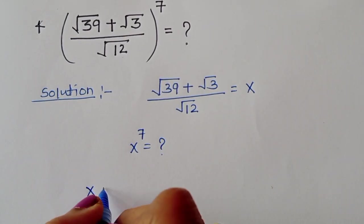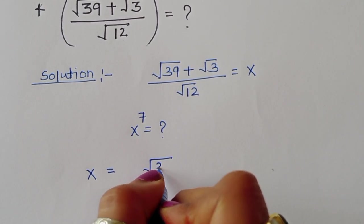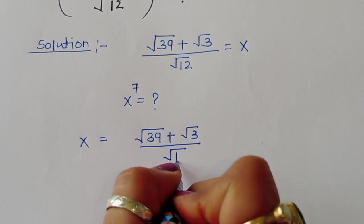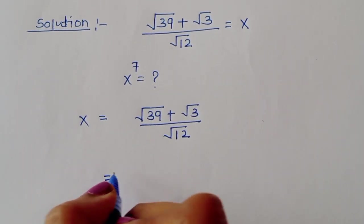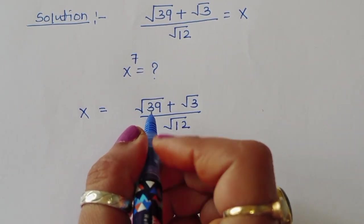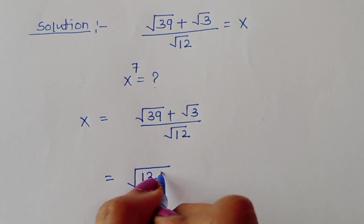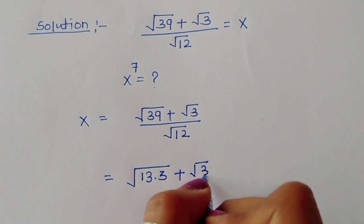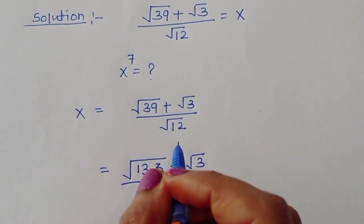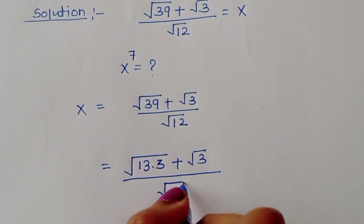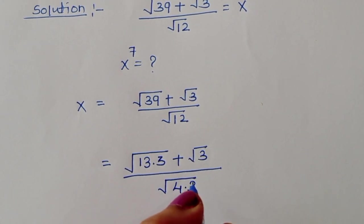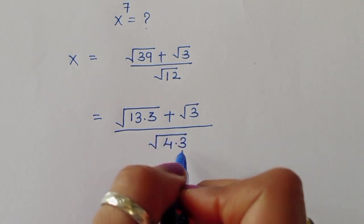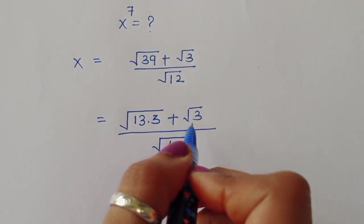So x is equal to (√39 + √3) / √12. We can convert √39 into √(13×3), since 13×3 = 39. Similarly, √12 can be written as √(4×3). We notice that √3 appears in all terms, so we convert everything into the form of √3.